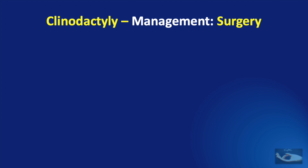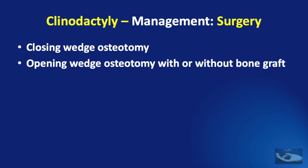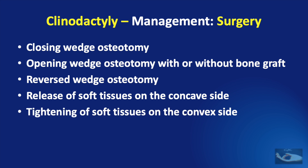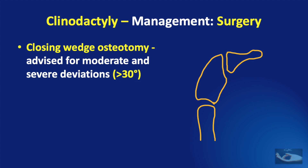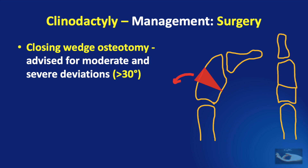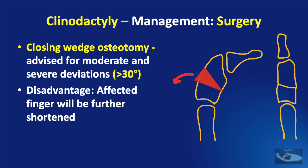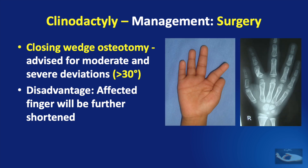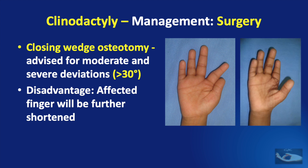The surgical management of congenital clinodactyly consists of closing wedge osteotomy, opening wedge osteotomy with or without bone graft, reversed wedge osteotomy, release of soft tissues on the concave side, tightening of soft tissues on the convex side, and a procedure called physiolysis. Closing wedge osteotomy is advised for moderate and severe deviations. A small wedge of bone is removed from the middle portion of the middle phalanx on the convex side of the digit; the finger is then aligned, closing the defect, and retrograde K-wires are used to stabilize the osteotomy. The disadvantage of this procedure is that the affected finger will be further shortened, as can be seen in this clinical example where shortening of the index finger is very obvious after correction of the angulation.